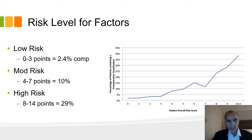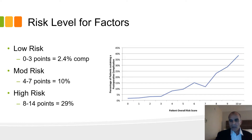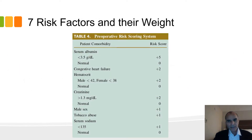Patients with 0 to 3 points on their scale had a very low risk of any complication. Those with 4 to 7 points had a 10% risk, and high risk was 30%. This is a great predictor, and it turns out to be accurate with time.